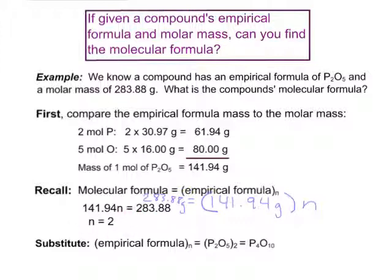Substituting n = 2 into our definition, we take the empirical formula P2O5 and multiply through by 2: 2 × 2 gives 4 phosphorus atoms, and 2 × 5 gives 10 oxygen atoms. So our molecular formula is P4O10 — tetraphosphorus decoxide.